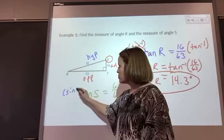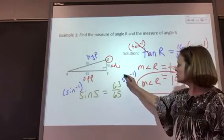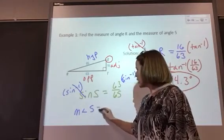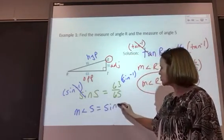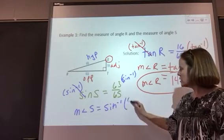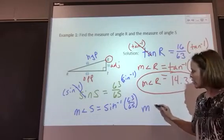Again, the inverse operation we're using is the same. Now I'm left with the measure of angle S equals. In our calculator, we're going to use that trig function, the inverse sine, 63 divided by 65. When we calculate that,